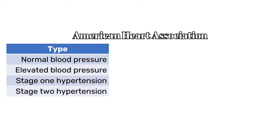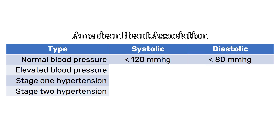According to the American Heart Association, blood pressure is categorized into four major categories: normal blood pressure, elevated blood pressure, stage 1 hypertension, and stage 2 hypertension. When the systolic pressure is below 120 millimeters of mercury and the diastolic blood pressure is below 80 millimeters of mercury, it is considered normal blood pressure.